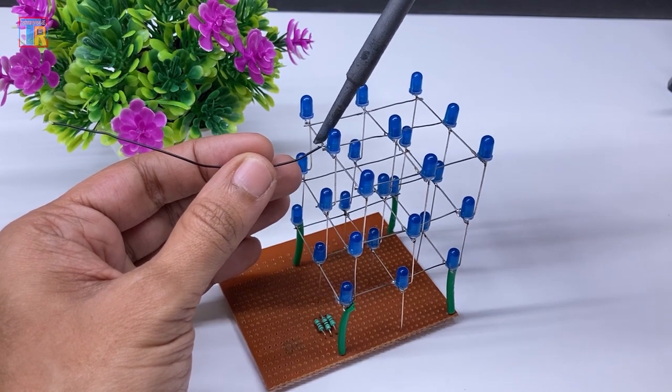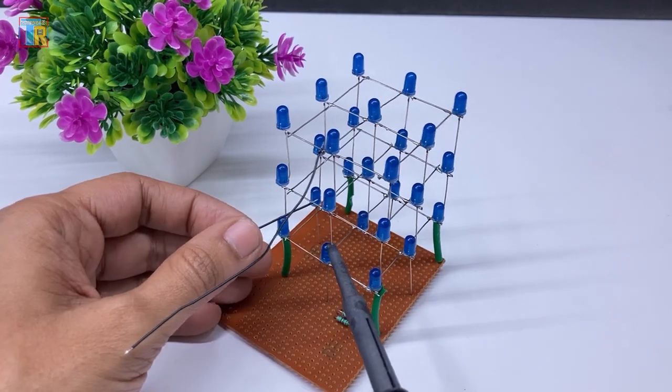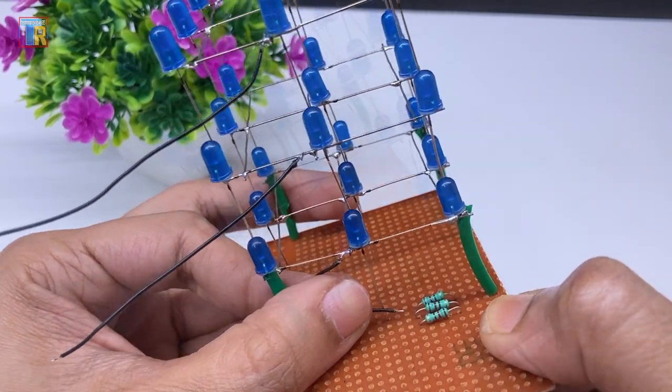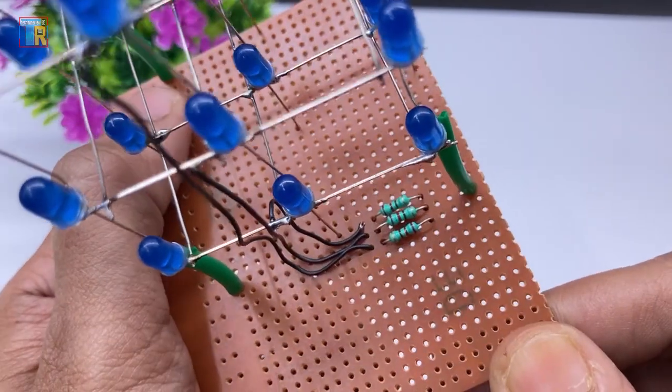Connect three wires to the negative pins of the LED for each layer.